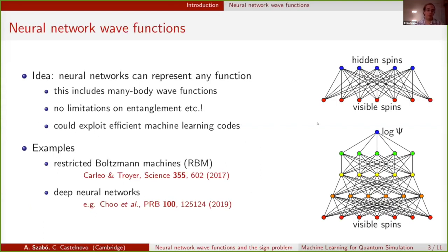The basic idea behind this work, and we've seen this many times in this conference, is that neural networks can in principle represent any function, so there is no reason to believe this doesn't include many-body wave functions. In principle, we don't have any limitations on the entanglement, nodal structures, and anything else that plagues standard numerical approaches. We can also exploit a number of very efficient machine learning codes that are out there.